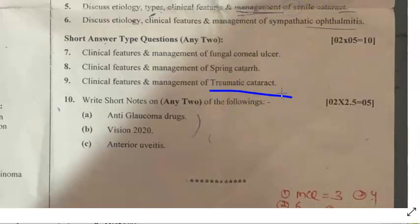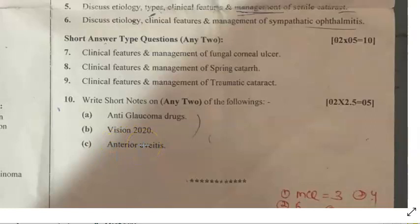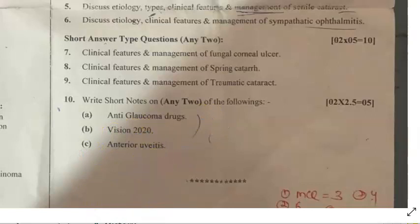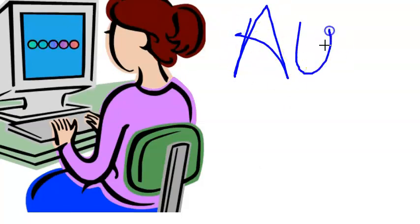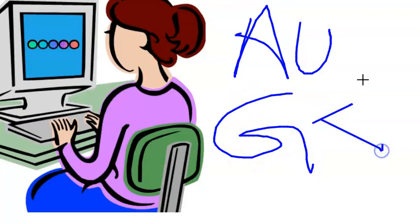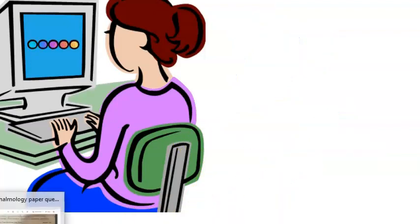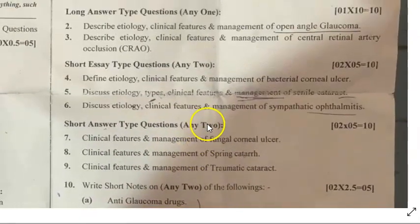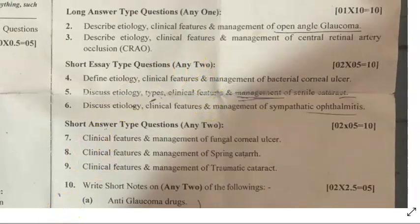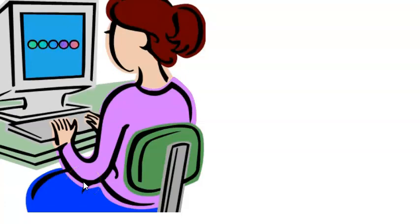Traumatic cataract presents as a rosette cataract. Anti-glaucoma drugs: write classification and examples with doses. Vision 2020: seven diseases from India — three were added (replacing onchocercosis). Anterior uveitis appears in all question papers under different names (acute iritis, anterior uveitis). Summary: the most important topics across all three papers are anterior uveitis, open and angle closure glaucoma, fungal keratitis, senile cataract, and sympathetic ophthalmitis.